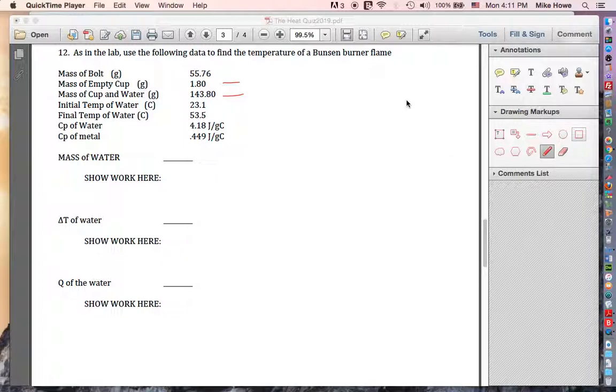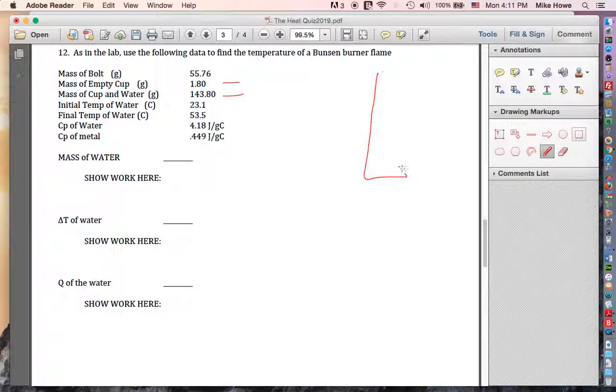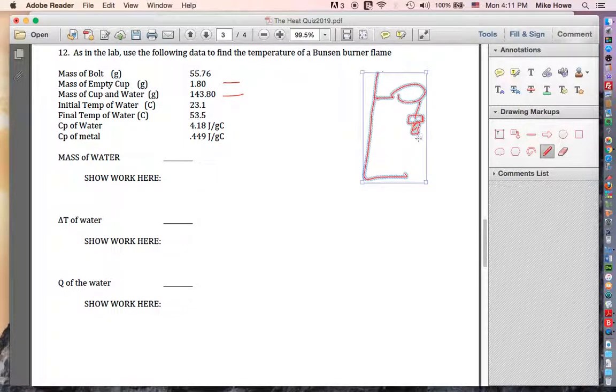Now this is like the lab that we did in class with the bolts. So remember we had a ring stand hanging like this. We had a base here. We had a ring. And out here we had a bolt hanging on it. There's a nice high quality bolt drawing. And then we had a styrofoam cup. It was sitting over here.